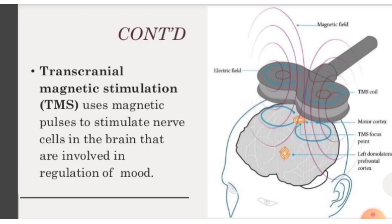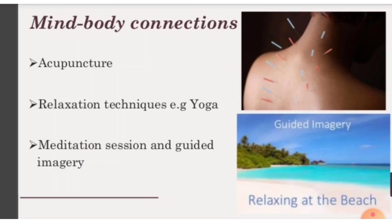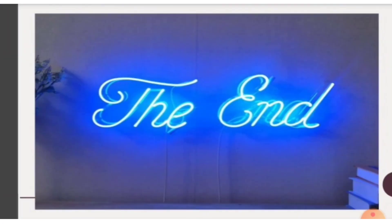Lifestyle and home remedies include sticking to the treatment plan — if your doctor prescribes psychotherapy plus medication, you need to take it according to the timeline given. Learn to pay attention to warning signs and possible triggers, and avoid alcohol and recreational drugs while on medication. Mind-body approaches include acupuncture, relaxation techniques such as yoga, meditation, and guided imagery, as well as massage therapy, art or music therapy, and aerobic exercises. These are some of the treatments that can be given to a person with clinical depression.